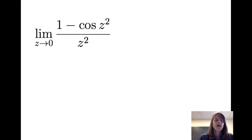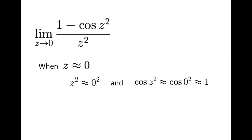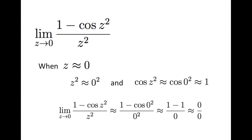Let's consider one additional example in which how the template might be used is not as obvious. Consider the limit of 1 minus the cosine of z squared divided by z squared as z goes to 0. Looking at the definition of limit, as z approaches 0, z squared is also close to 0, so the cosine of z squared is approximately the cosine of 0, which is 1. So we get approximately 0 divided by 0 — we must do more work.